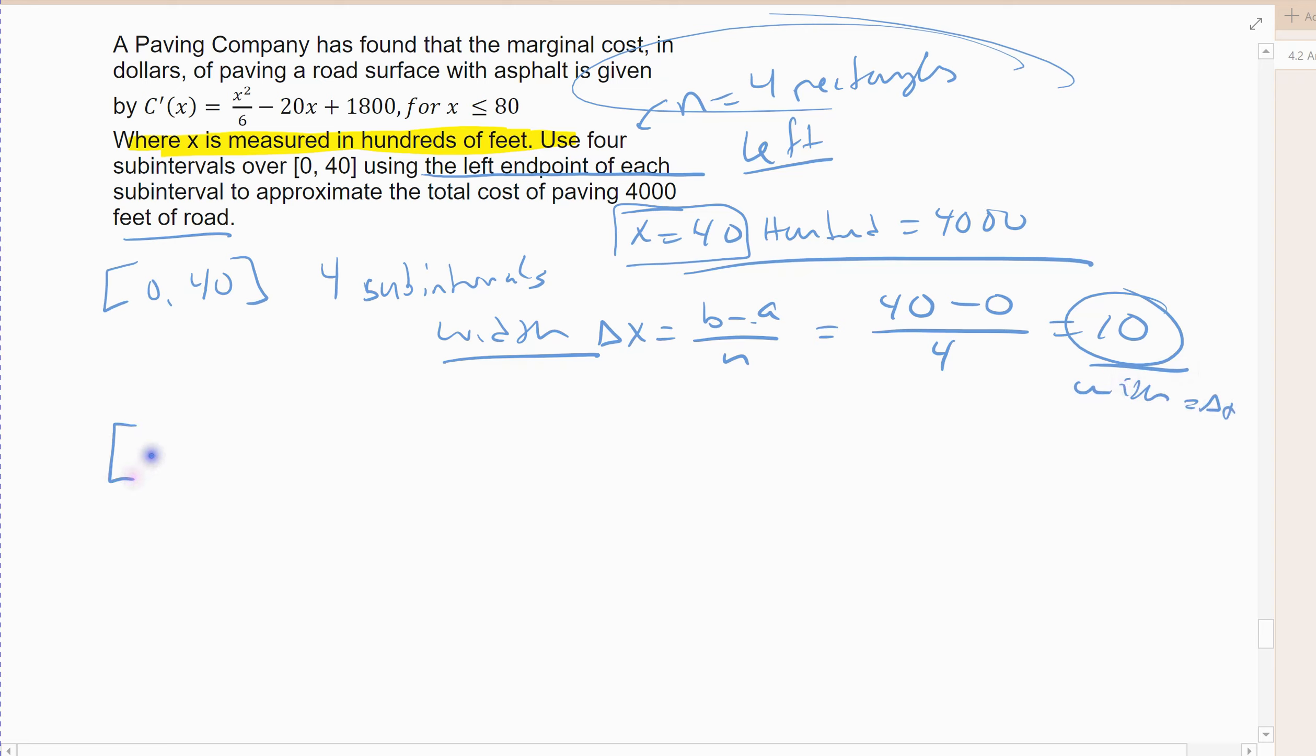Alright, so if I redraw my subintervals, I'm going to go 0 to 10, 10 to 20, 20 to 30, 30 to 40. And if I drew this out, this would give me my area 1, this would give me my area 2, area 3, area 4. So that's where my 4 rectangles will be drawn.